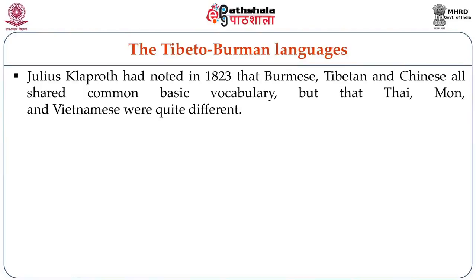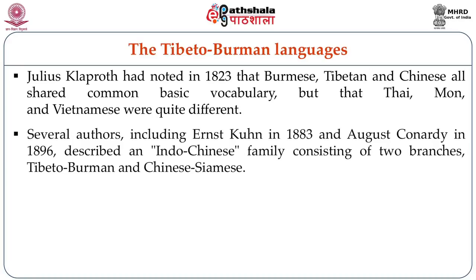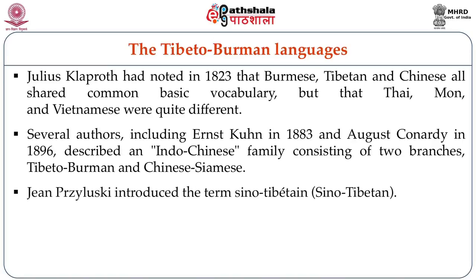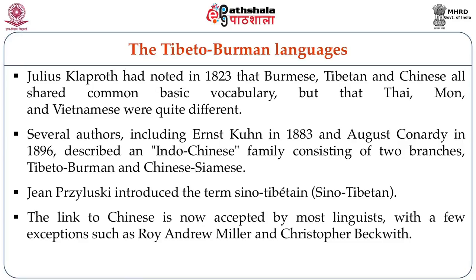Julius Klaproth had noted in 1823 that Burmese, Tibetan and Chinese all shared common basic vocabularies, but that Thai, Mon and Vietnamese were quite different. Several authors, including Kuhn in 1883 and August Conradi in 1896, described an Indo-Chinese family consisting of two branches: Tibeto-Burman and Chinese-Siamese. Jean Przyluski introduced the term Sino-Tibetan. The link to Chinese is now accepted by most linguists, with a few exceptions such as Roy Andrew Miller and others.